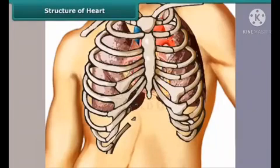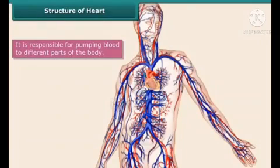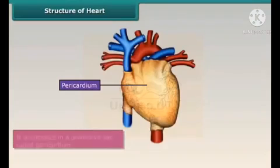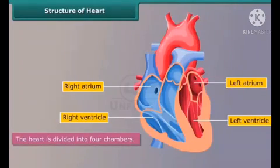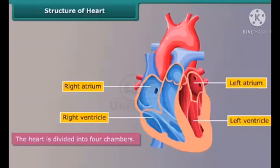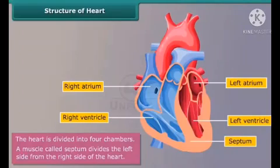The heart is a muscular organ located slightly to the left of the middle in the chest cavity. It is the size of a human fist and is responsible for pumping blood to different parts of the body. It is enclosed in a protective sac called the pericardium. The heart is divided into four chambers: the left atrium and right atrium at the top, and the left ventricle and right ventricle at the bottom.